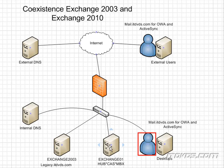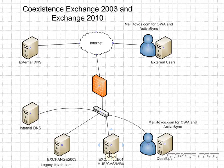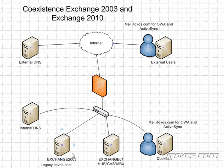We'll configure our Exchange 2010 server to send email out to the Internet and also receive email from mail servers on the Internet. So mail from another mail server is going to go through the Internet to the firewall, hit our Exchange 2010 server, which will then either send it to the correct Exchange 2010 mailbox or send it over to another Exchange 2003 server to be routed to the correct Exchange 2003 mailbox.